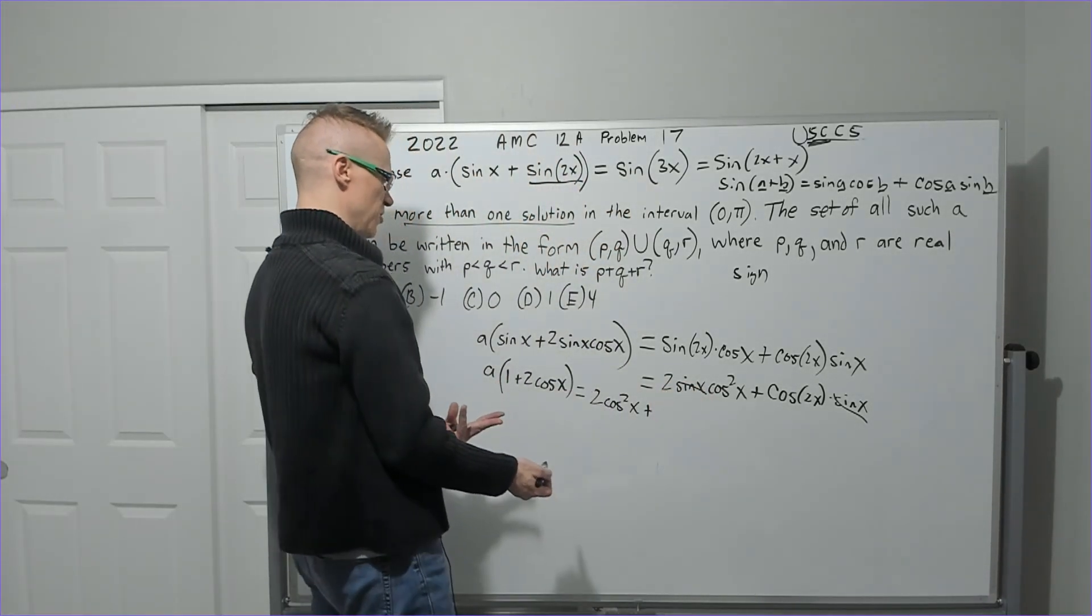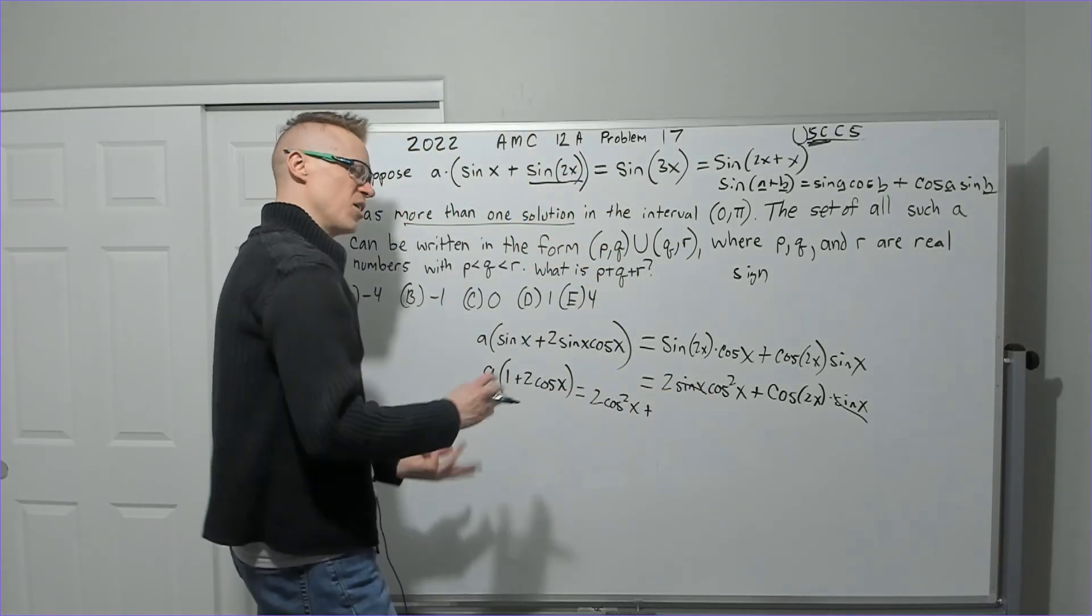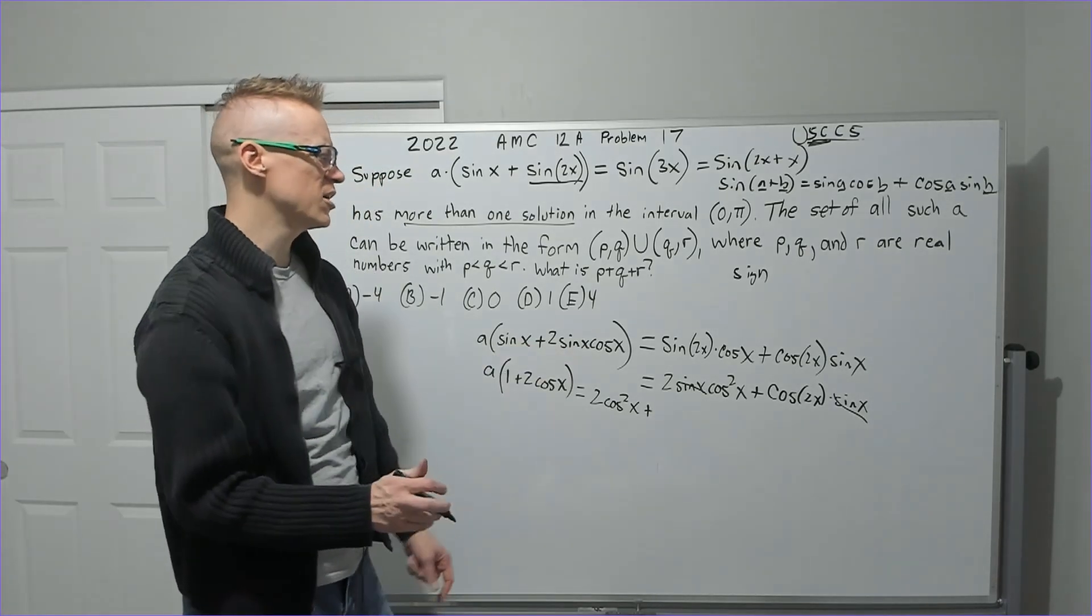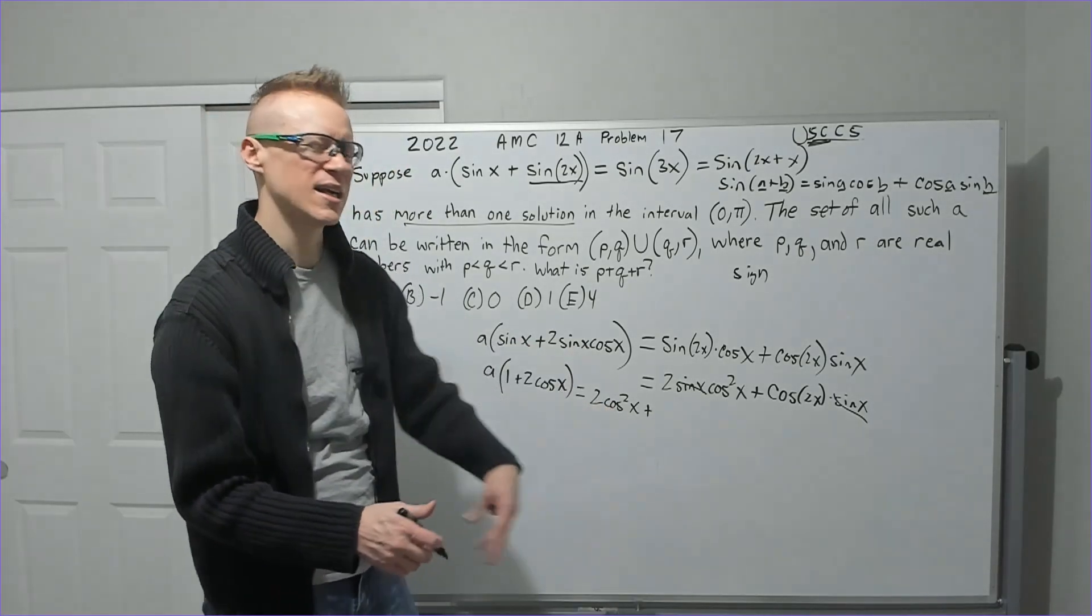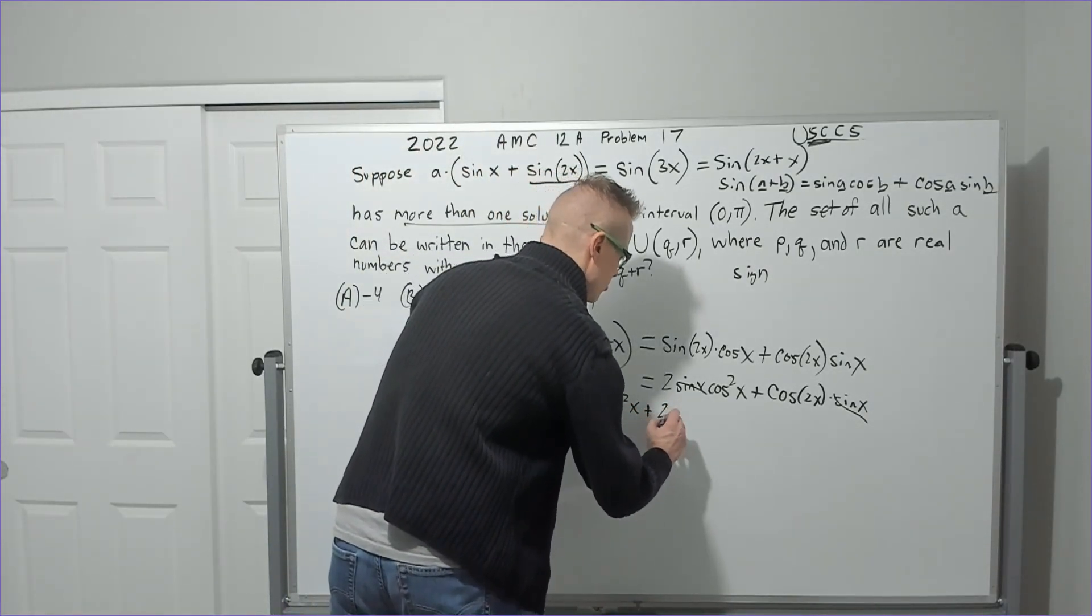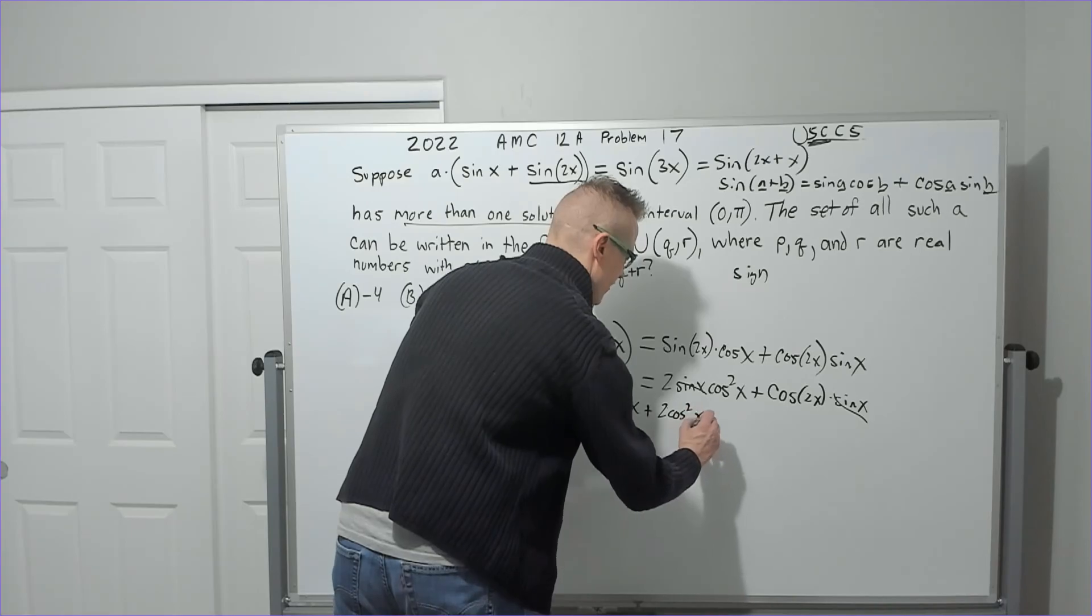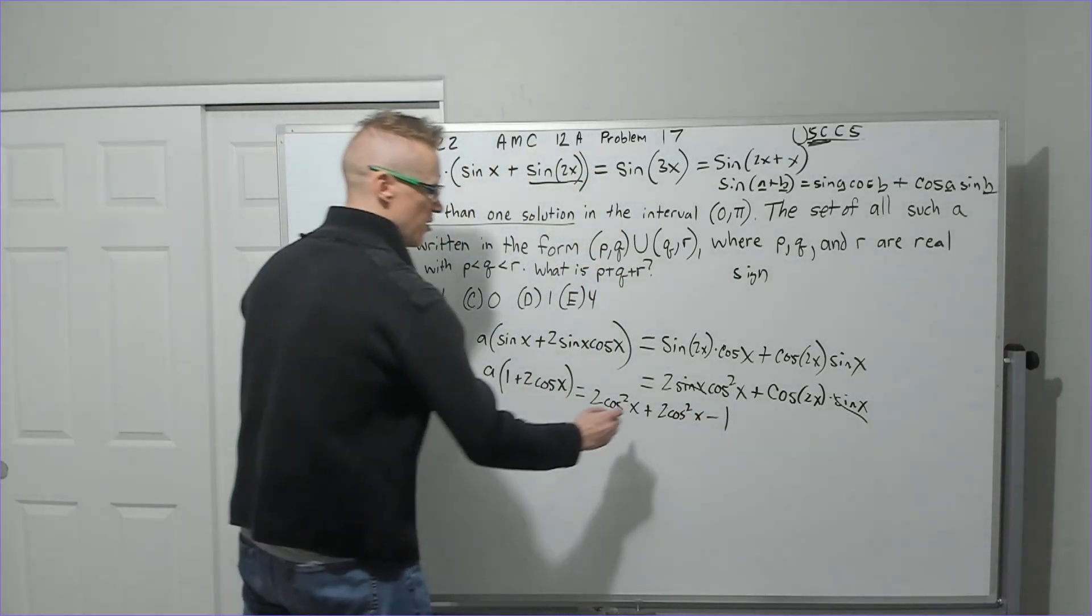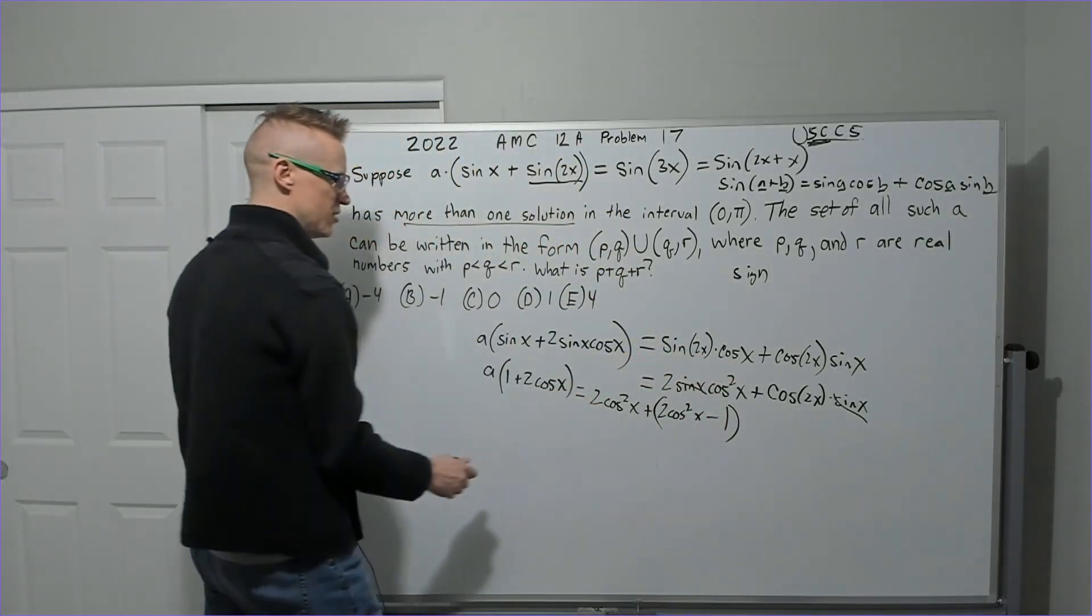What should I do with cos of 2x? I feel like I don't want the 2x, so we're going to need the double angle formula for cosine, but I've got only cosines left. Therefore, I'm going to target 2 cosine squared of x minus 1. There are three versions of that double angle formula.